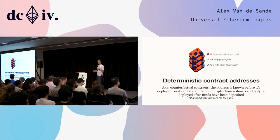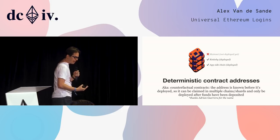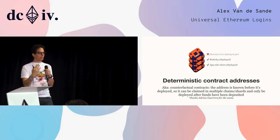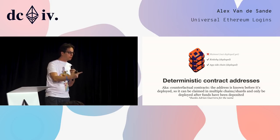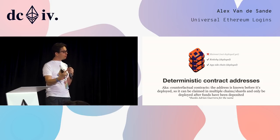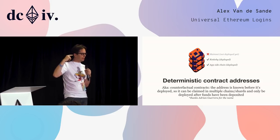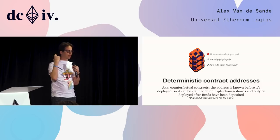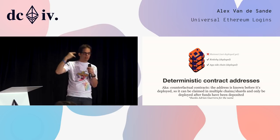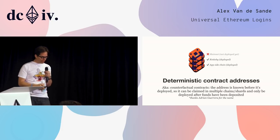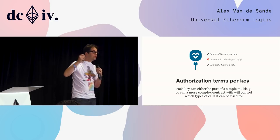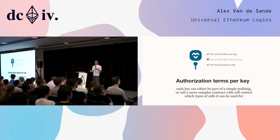We also have counterfactual contracts — I hate the name, but basically it's a deterministic contract address, meaning you already have the contract address before you deploy it. You can already send funds or tokens to that address before deploying. You can pretend for your users that the account is live until they pay, then you deploy the contract. Because it works on multiple chains, you can deploy on a testnet or sidechain and only move to the mainchain after the user has passed some threshold. Also, authorization terms per key: not every key is the same. Some keys can add transactions; other keys cannot.